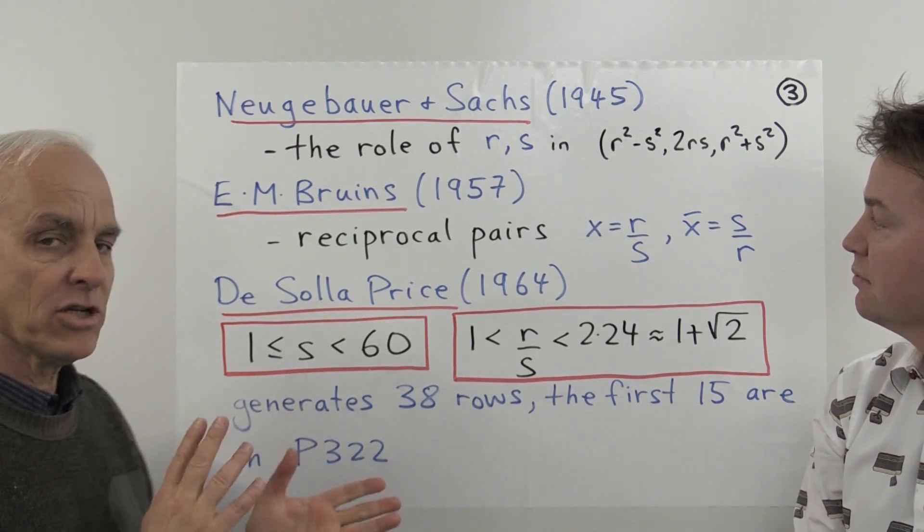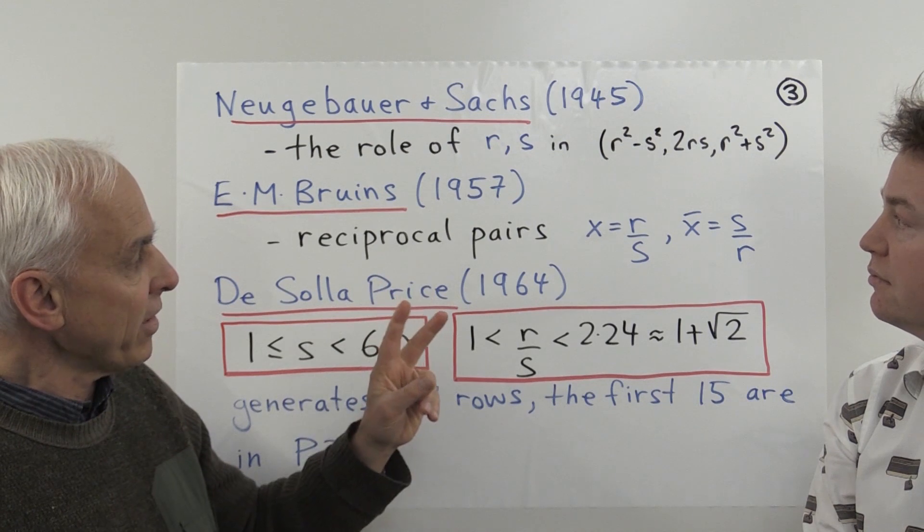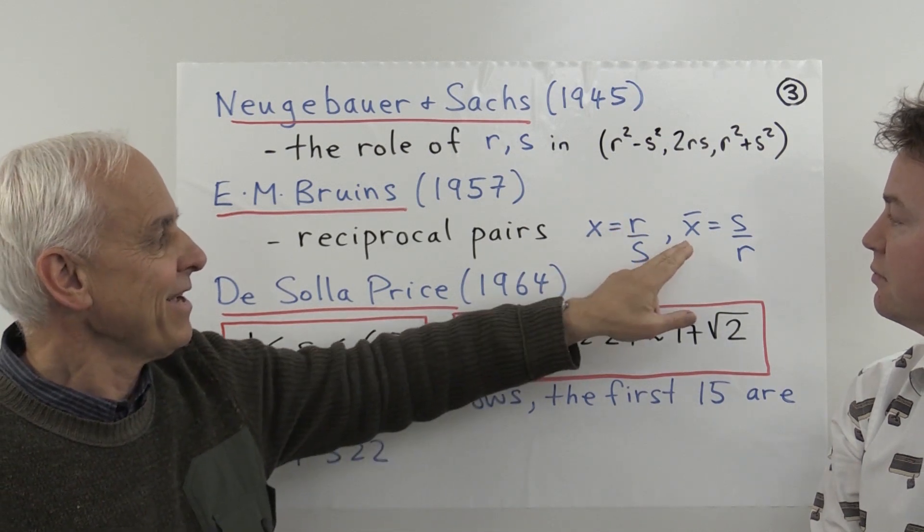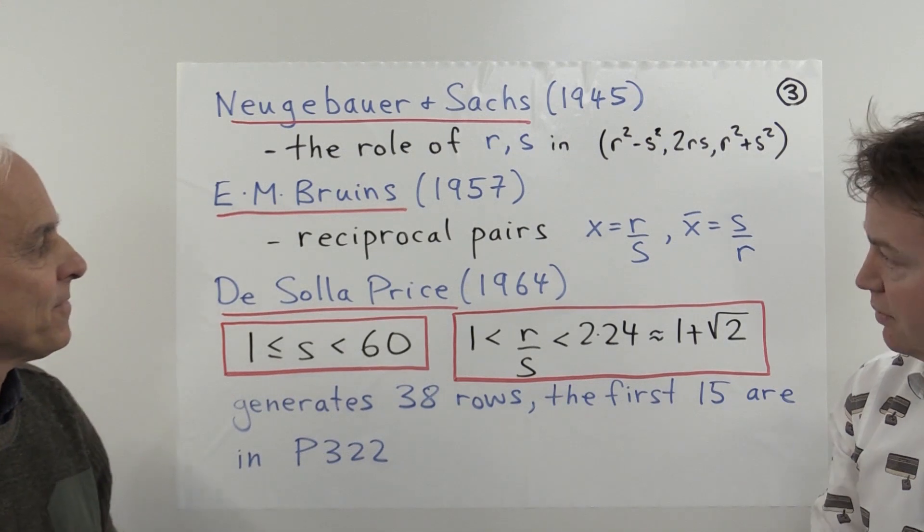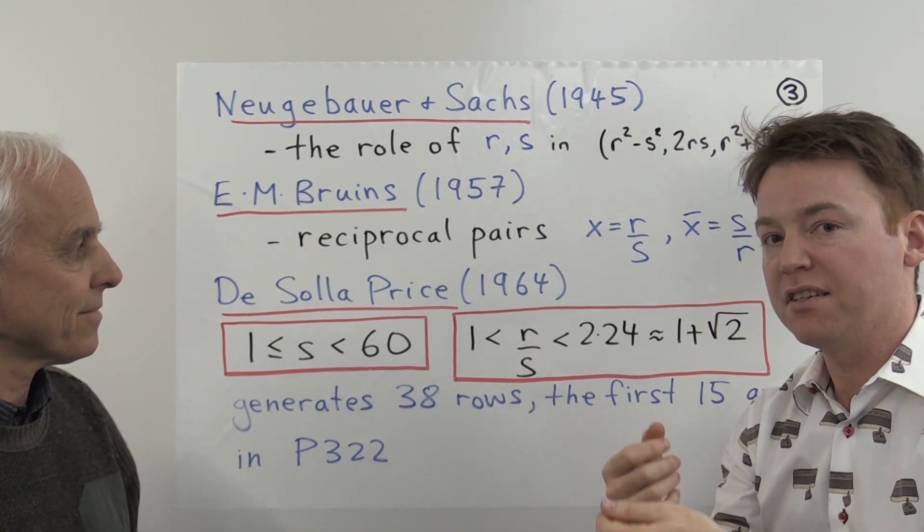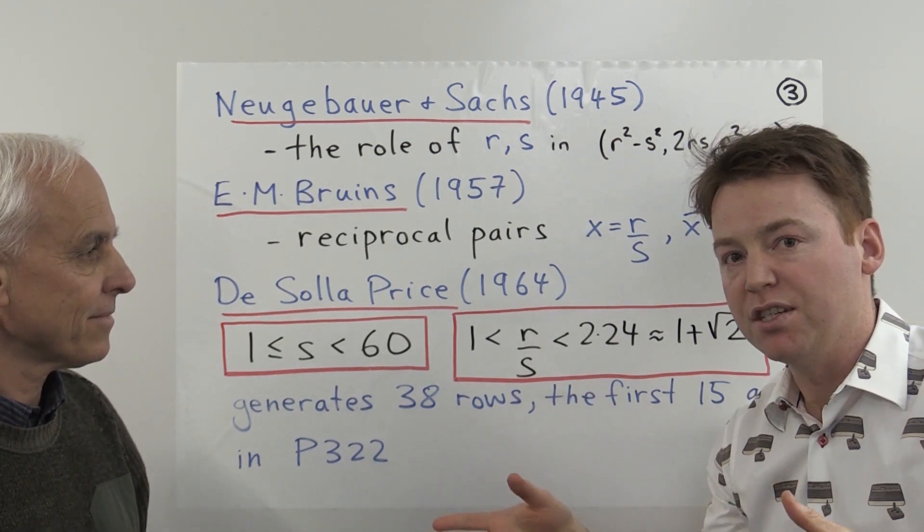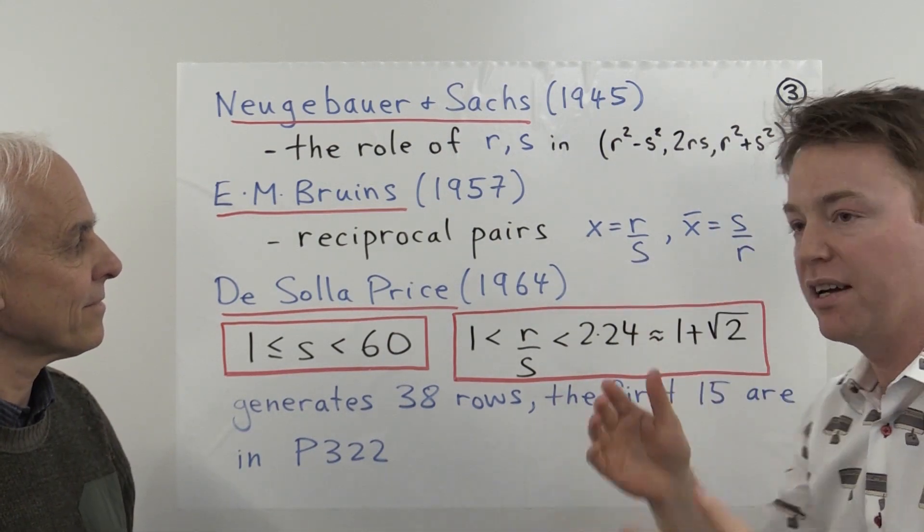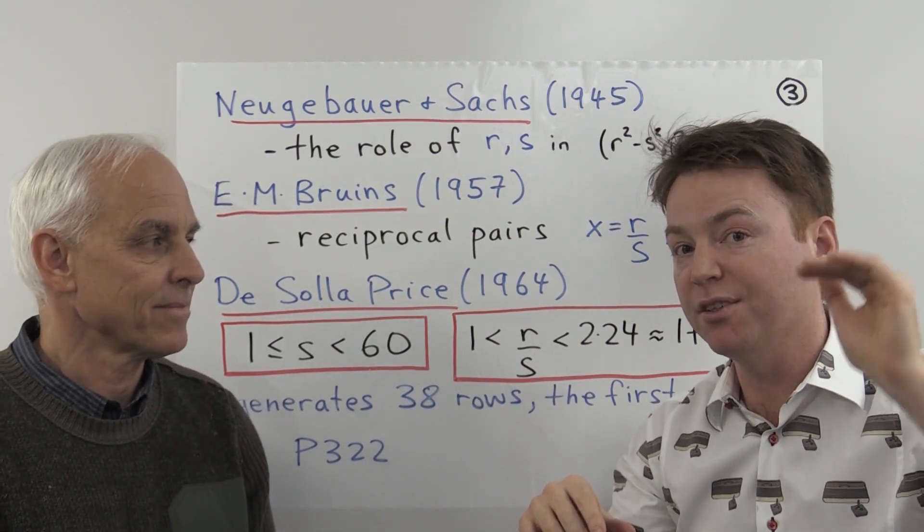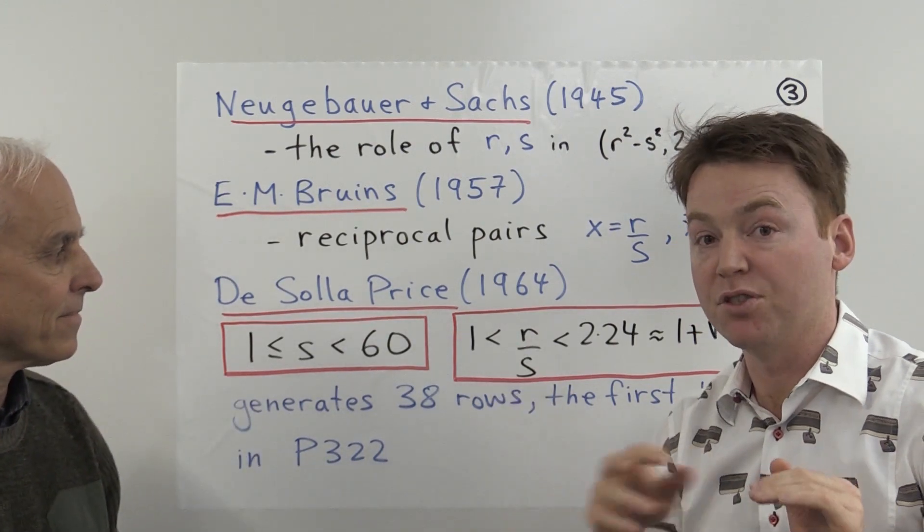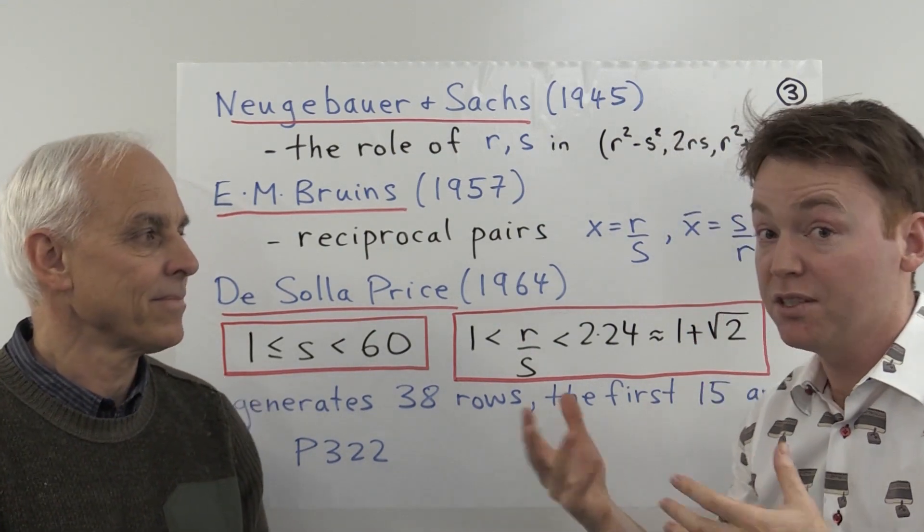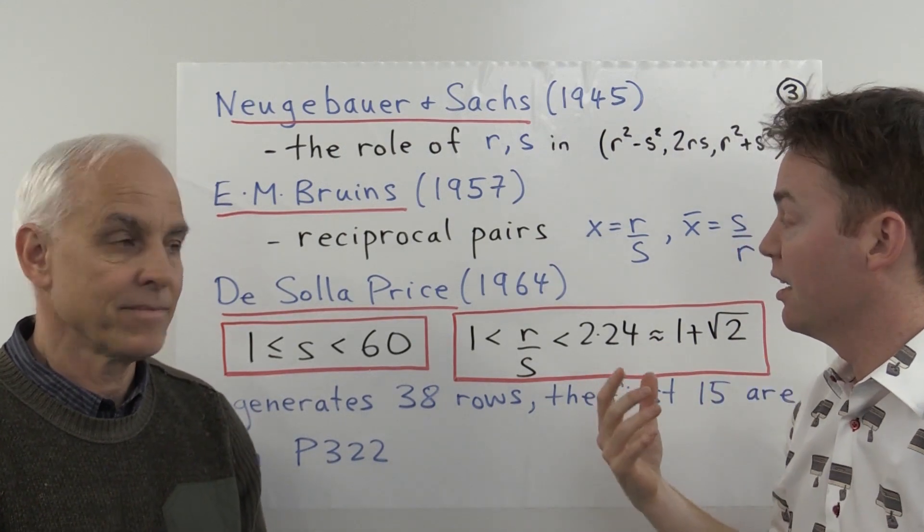And then sometime later, E.M. Bruins came along with a variant of this theory, which emphasized not the numbers R and S, but rather the ratios of R over S—what we would call R over S, what they would call R times S bar—and the reciprocal X bar, which is S over R. The advantage of Bruins' theory is his idea that you should be able to read off the values of X and X bar from some kind of procedure or some kind of tablet. So he suggested that X and X bar came from a sophisticated table of reciprocals, and that Plimpton was generated from the scribe reading through that sophisticated table of reciprocals and just applying the procedure to generate a rectangular right triangle. We don't know of any table of reciprocals that sophisticated, but it's a nice idea. The procedural aspect of it is a nice idea.